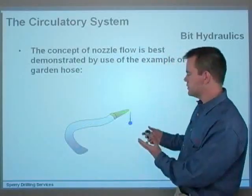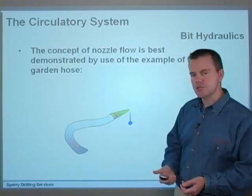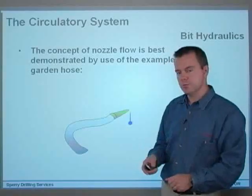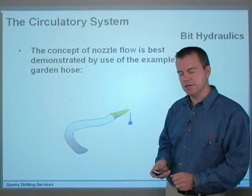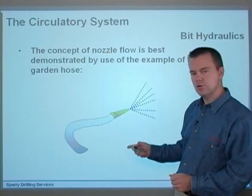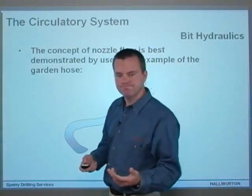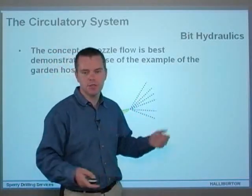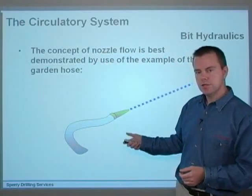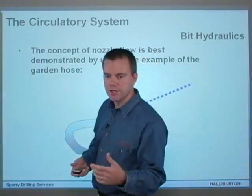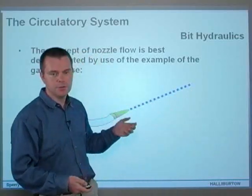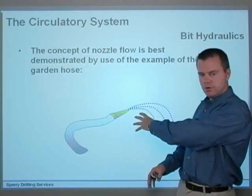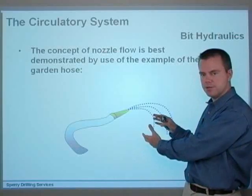Before talking about bit hydraulics, we need to understand what nozzle flow is all about. The best way to demonstrate that is by looking at a garden hose. If the nozzle is screwed completely shut, you've got no flow coming out. If you open the nozzle a little, you start getting some water and some cleaning power. Open it more and you get a nice jet with optimum cleaning power. But if you continue to open the nozzle too wide, that optimum flow rate is passed and you end up with a trickle — a lot of flow but no cleaning power.